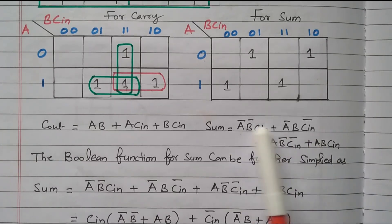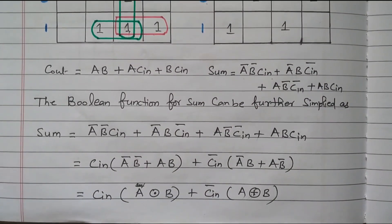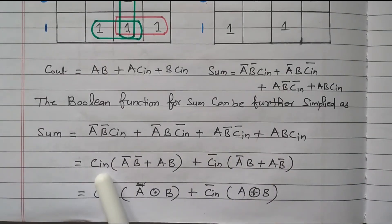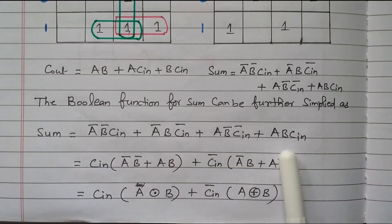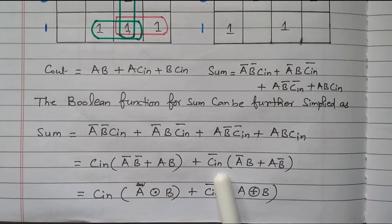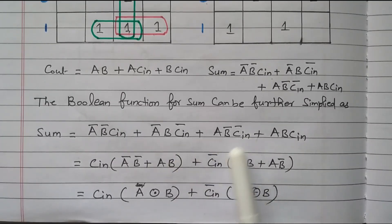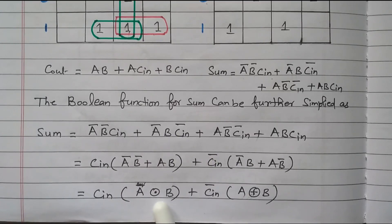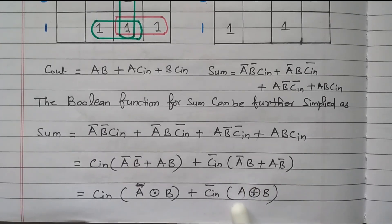Now we can simplify this sum expression further. Taking Cin outside from the first and fourth terms gives Cin·(Ā·B̄ + A·B), and taking C̄in outside from the second and third terms gives C̄in·(Ā·B + A·B̄). The expression Ā·B̄ + A·B is an XNOR gate (A XNOR B), and Ā·B + A·B̄ is an XOR gate (A XOR B).